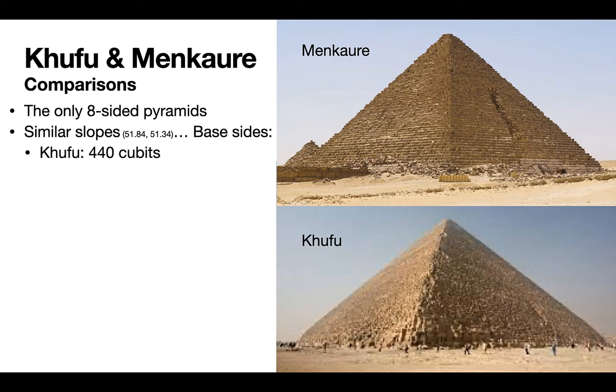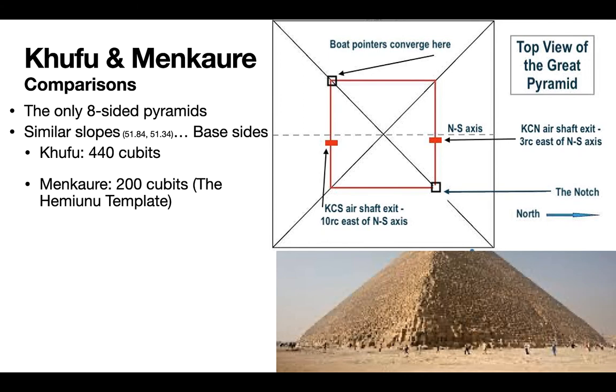Okay. So they both have similar slope angles. The base side, so for Khufu, one base side is 440 cubits, and for Menkaure it's 200 cubits. Now it's interesting, I have found, and I've done other programs about this and will continue to, inside the Great Pyramid I found the Hemayunu template. Hemayunu is the architect of the Great Pyramid, and here's a top view now of the Hemayunu template, which has got sides of 200 cubits, just like Menkaure.